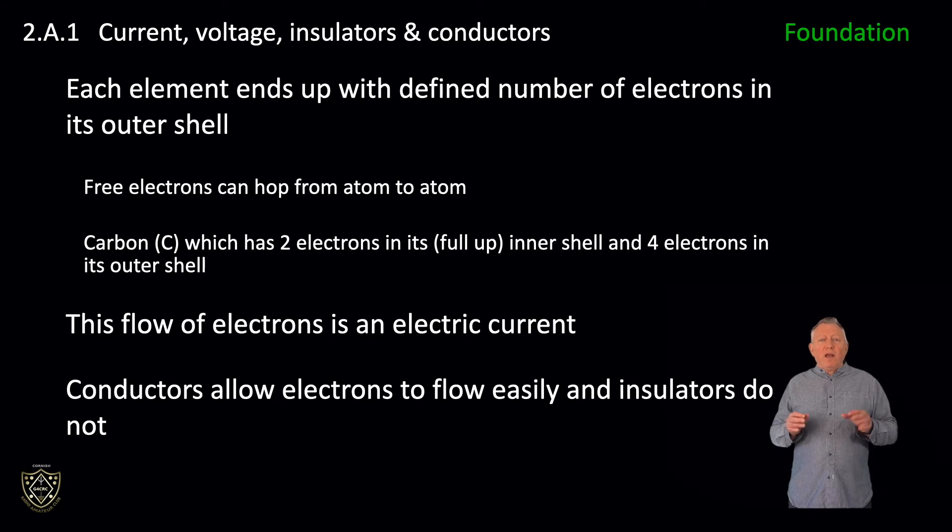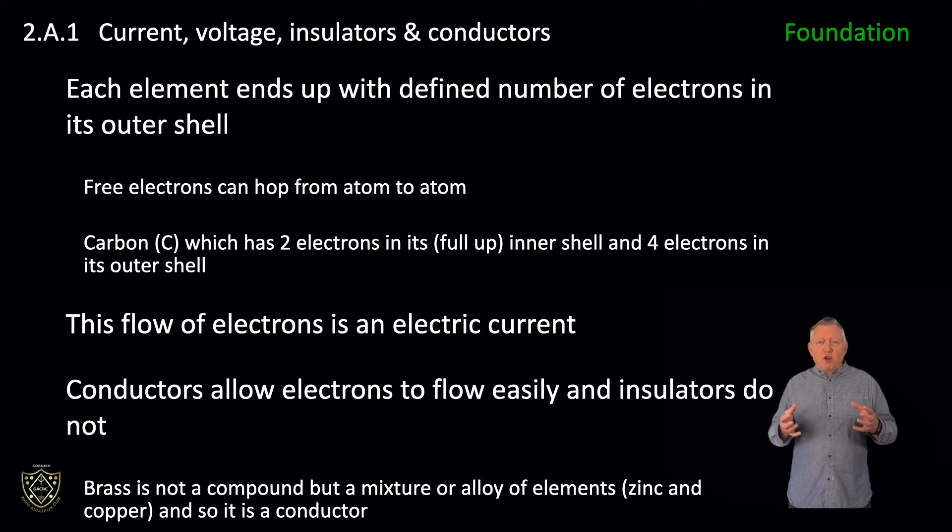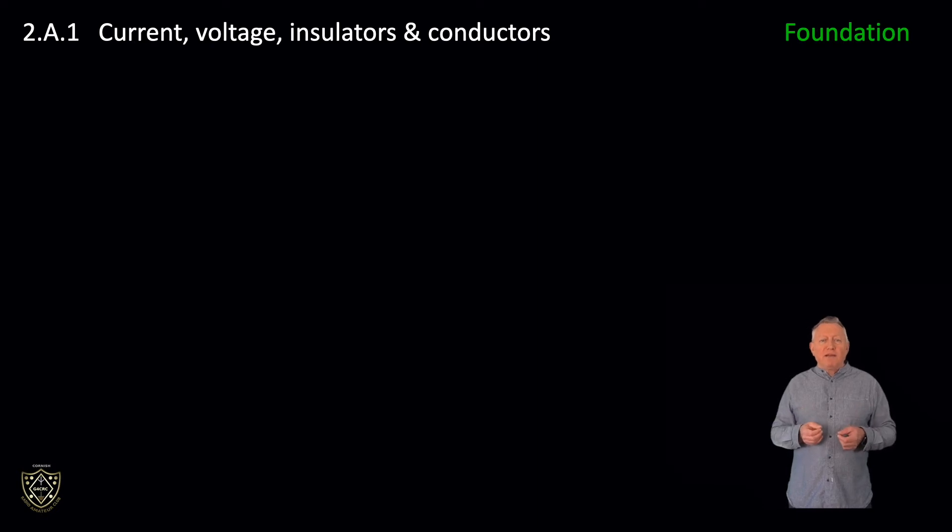Conductors allow electrons to flow easily, and insulators do not. In a gas or liquid, the nuclei—the center of the atom containing the protons—are free to move. In solids, they are packed densely together and cannot move. If an element that has free electrons chemically combines with another element by sharing electrons in its outer shell, then the resulting compound may not have free electrons and thus be an insulator. So brass is not a compound but a mixture or alloy of elements: zinc and copper. And so it is a conductor because electrons are not chemically shared between the zinc and copper atoms but remain free. Copper and brass are good conductors. Plastics, rubber, glass, and ceramic are insulators.